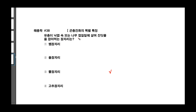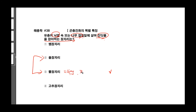유충인 낙엽 속 또는 껍질 밑에서 살며 진딧물을 잡아먹는 것은 앞에서 말씀드렸죠. 낙엽 속에서 껍질 밑에서 산다, 그리고 진딧물을 잡아먹는다. 이 두 가지를 헷갈리셨을 거예요. 낙엽 속 껍질 밑이라는 키워드가 나오면 이건 풀잠자리에 대한 설명이고요.